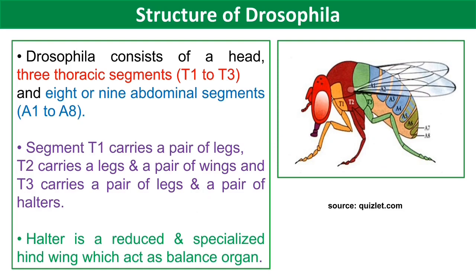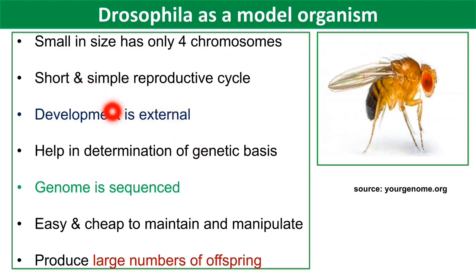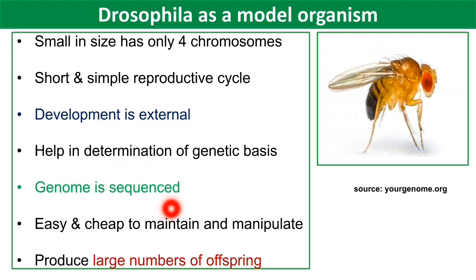Drosophila is used as a model organism for a variety of reasons. It is small in size and has only four chromosomes. It has a short and simple reproductive cycle. Its development is external, which helps in determination of the genetic basis. Its whole genome has been sequenced. It is very easy and cheap to maintain in laboratory conditions, easy to manipulate, and it produces a large number of offspring.